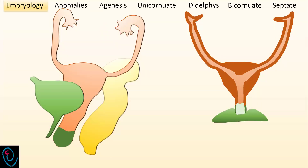Finally, this ends with the formation of fallopian tubes, uterus, cervix, and vagina. The upper part of the vagina originates from the Müllerian duct, while the lower part of the vagina originates from the urogenital sinus.